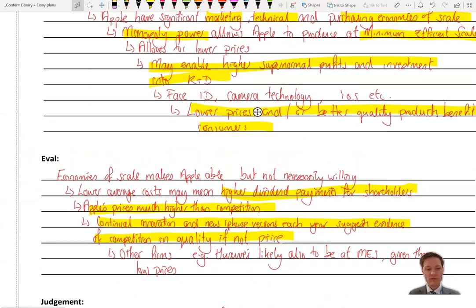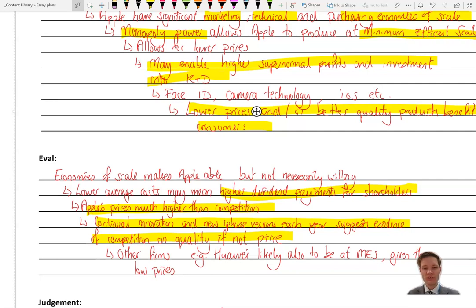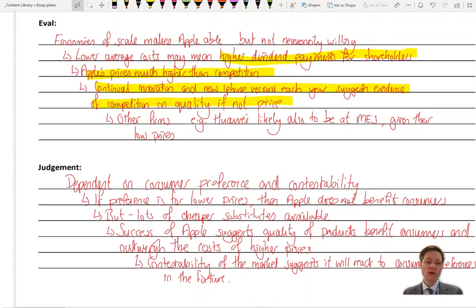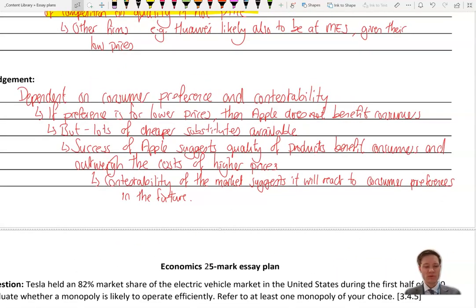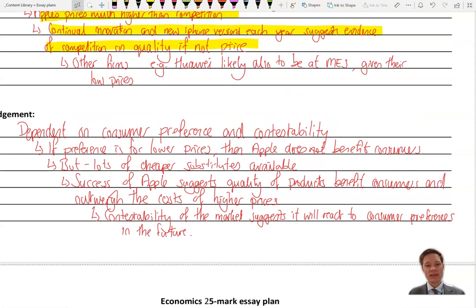Right. Finally, judgment. See what you can find. What does this whole essay hinge around? Are you going to come to a very clear judgment? And what does it depend on? Think about that and come back in a couple of minutes. Right. In judgment, we don't want to rehash all of our arguments. We want to make a real clear conclusion. And clearly, it is dependent on our consumer preference and our contestability of the market. If the preference is for lower prices, then Apple does not seem to be benefiting consumers. It is providing high price products at a very high price point, but high quality. However, even if you say that Apple's behavior is not necessarily anti-competitive, it doesn't limit or it doesn't seem to be limiting the cheaper substitutes which are available in the market. So even if you can say that it doesn't benefit consumers in this way, it still doesn't prevent consumers from buying the alternatives.